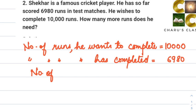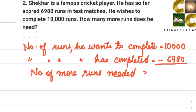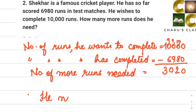Number of more runs needed is equal to 10,000 minus 6,980. Starting from ones: 0 minus 0 is 0. Tens: 0 minus 8, we borrow — it becomes 10, write 2, carry borrow. Hundreds: 9 minus 9 is 0. Thousands: 9 minus 6 is 3. So he needs 3,020 more runs to complete 10,000.